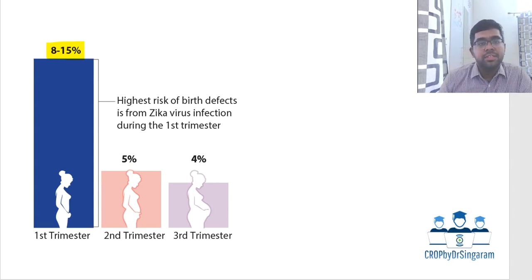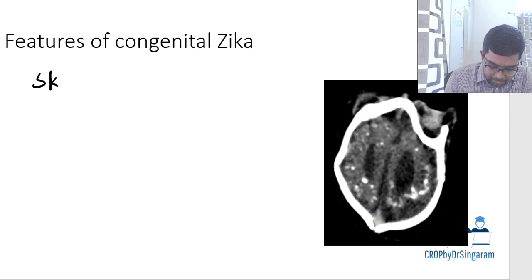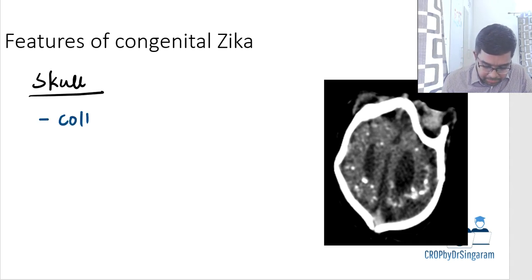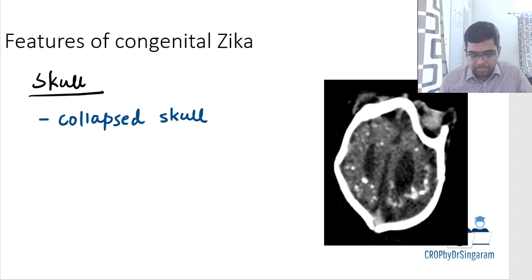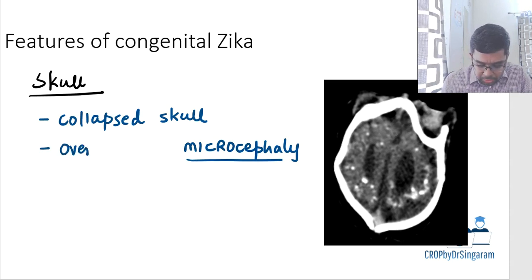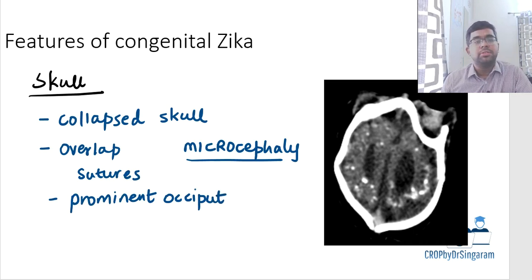The features of congenital Zika syndrome are predominantly neurological, as it is a neurotropic virus. Starting with skull manifestations: there is a partially collapsed skull contributing to microcephaly, overlapping of skull sutures, and a prominent occiput. These are the prominent skull findings associated with congenital Zika syndrome.